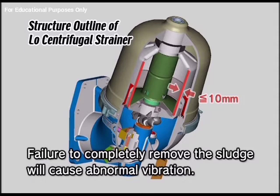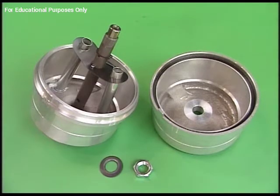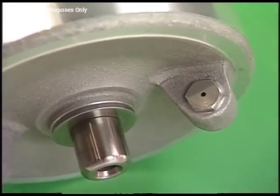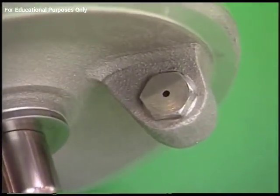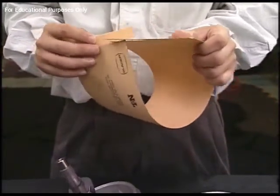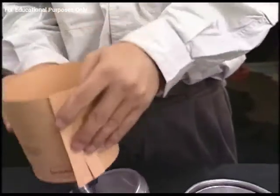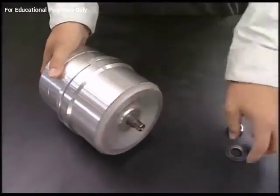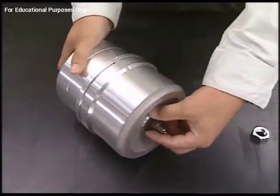Remove the sludge on the inside wall of the rotor. If the thickness of sludge deposition is over 10 millimeters, the cleaning effect will not be produced. Clean the rotor body and rotor cover, and check for clogging of the nozzle. After renewing the O-ring, reassemble the centrifugal bypass strainer in the reverse procedure. If a paper insert is put in, it will be easy to remove the sludge next time.